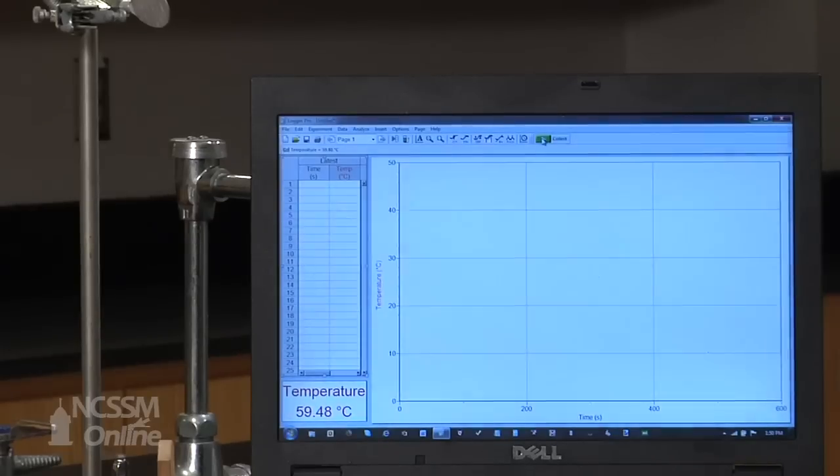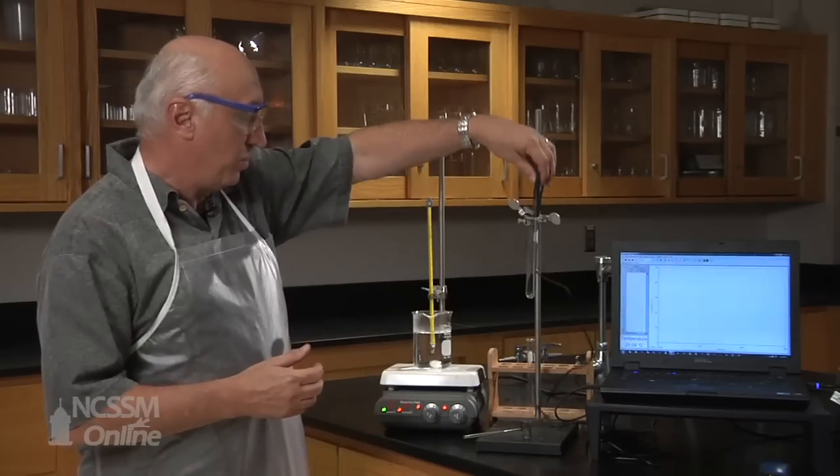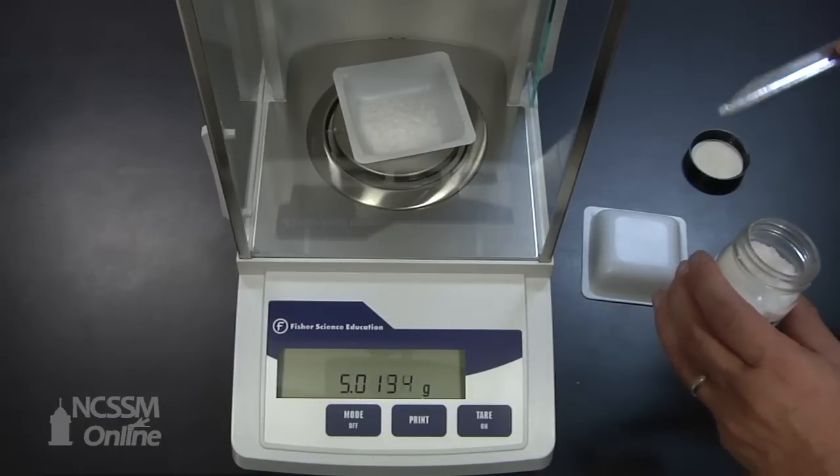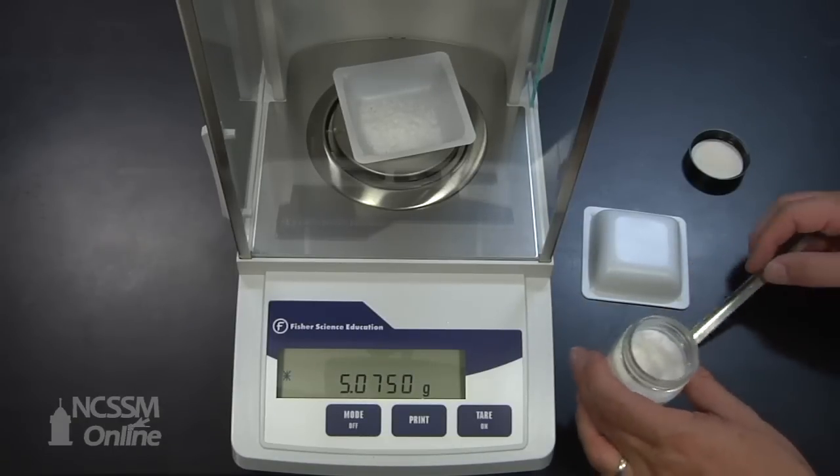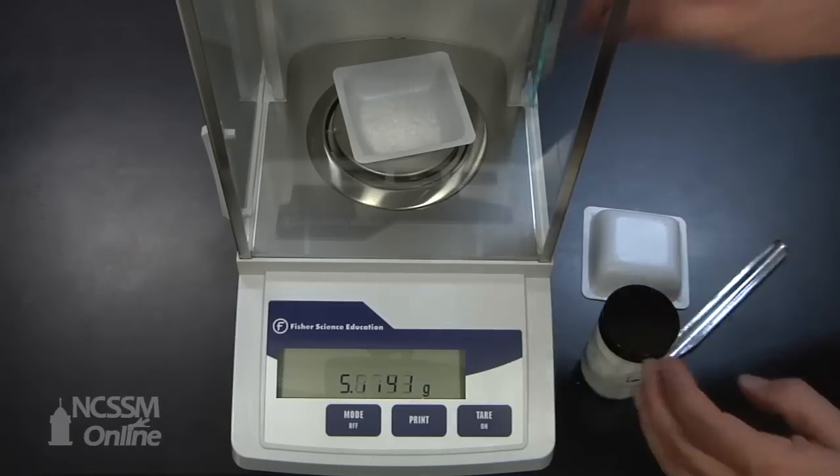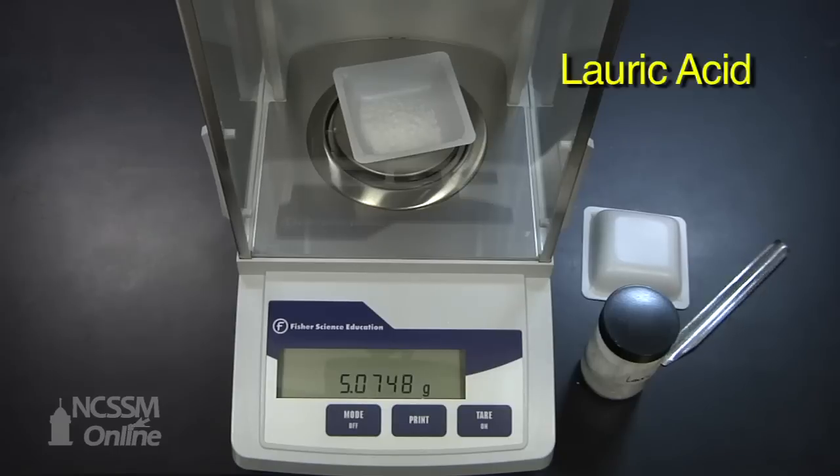As you can see here, I set up the logger probe to measure the temperature. And this is our temperature probe. The first step in this lab is to measure approximately 5 grams of lauric acid, which is going to be our solvent.